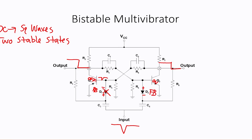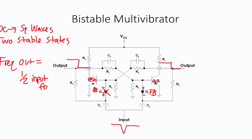That is our second stable state. Notice that our outputs are still 180 degrees out of phase with one another. Because this circuit requires two input pulses to create one waveform on the output, we can say that the output frequency is equal to half the input frequency. So if we have 10 kHz coming in, we will have 5 kHz coming out of our outputs.